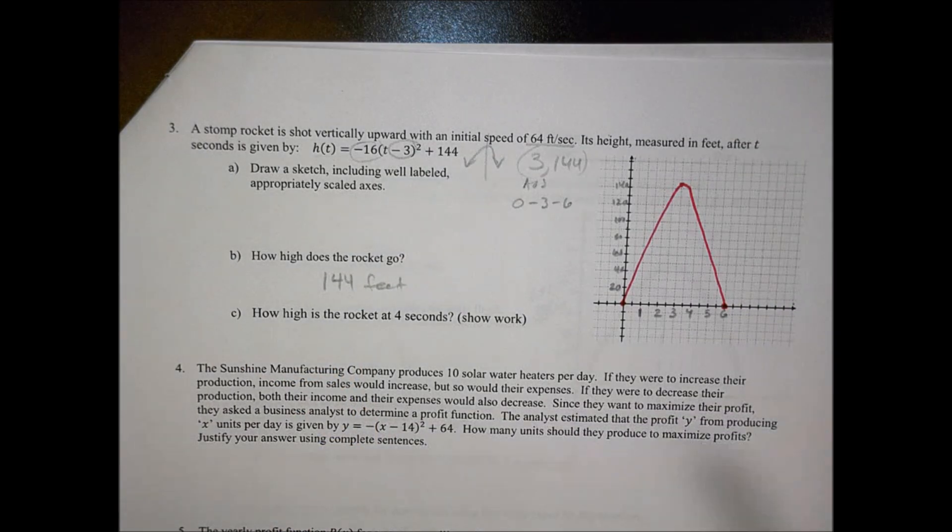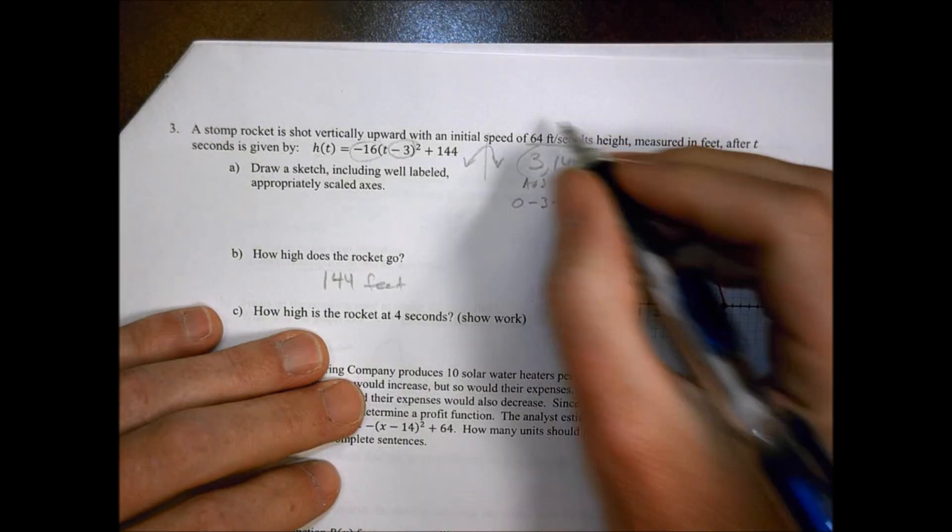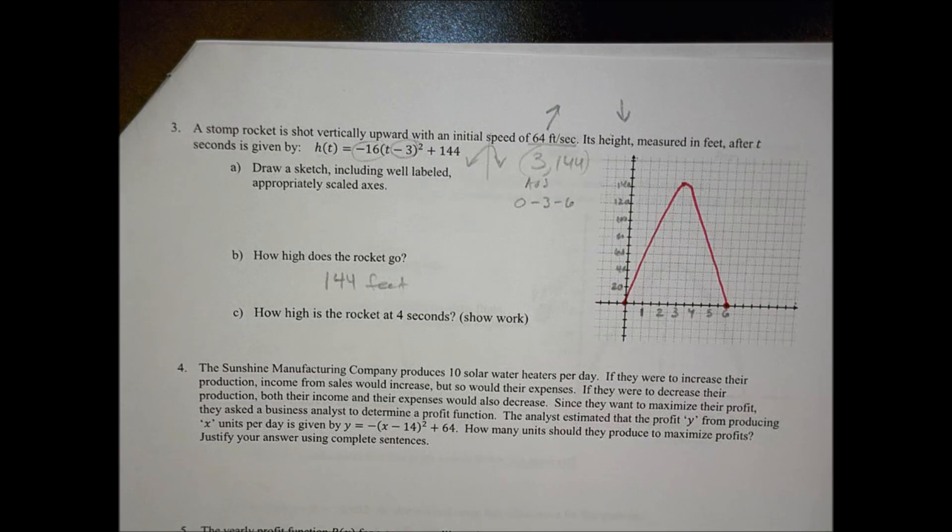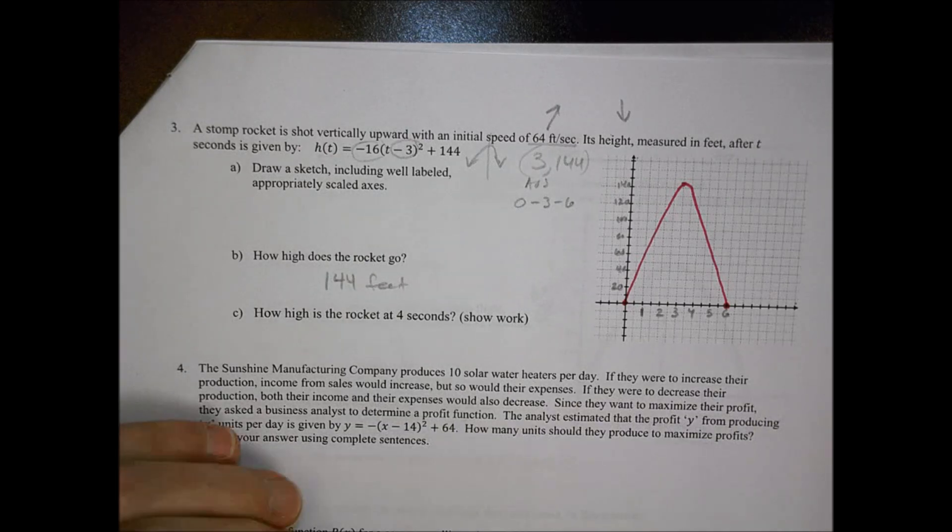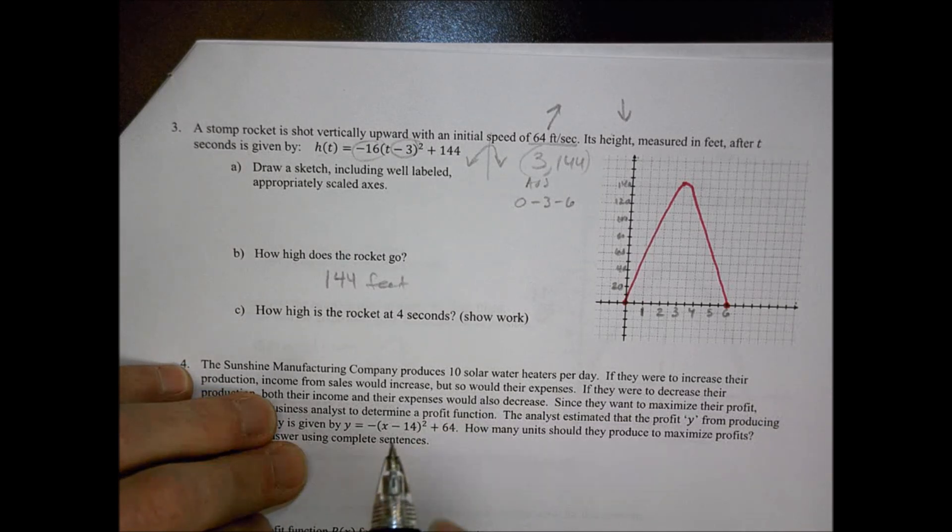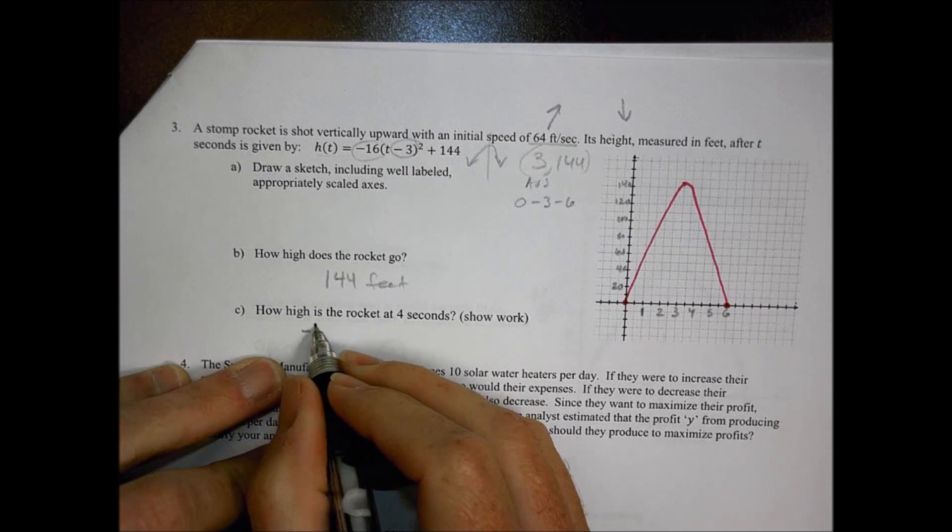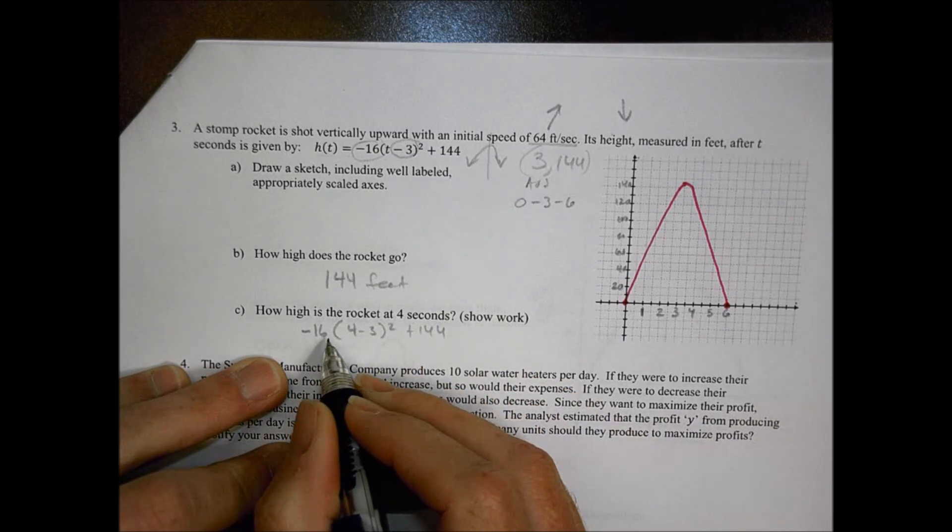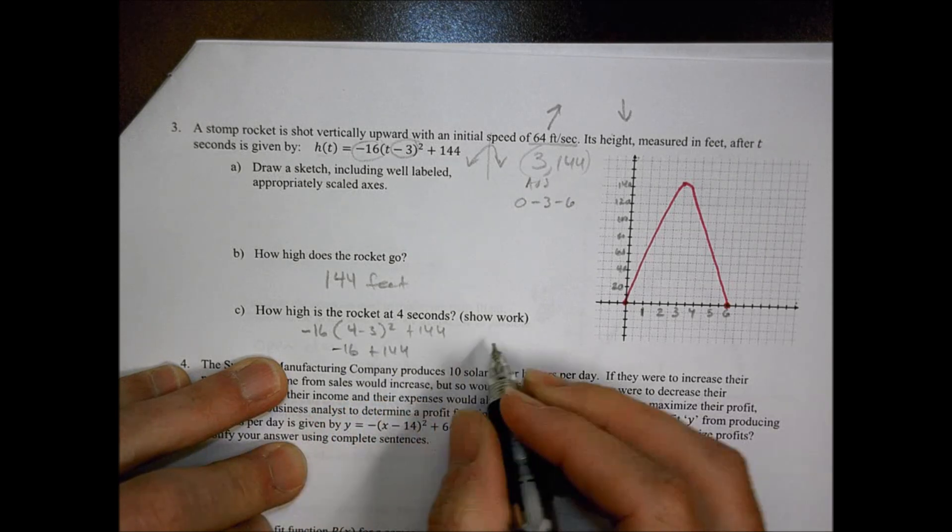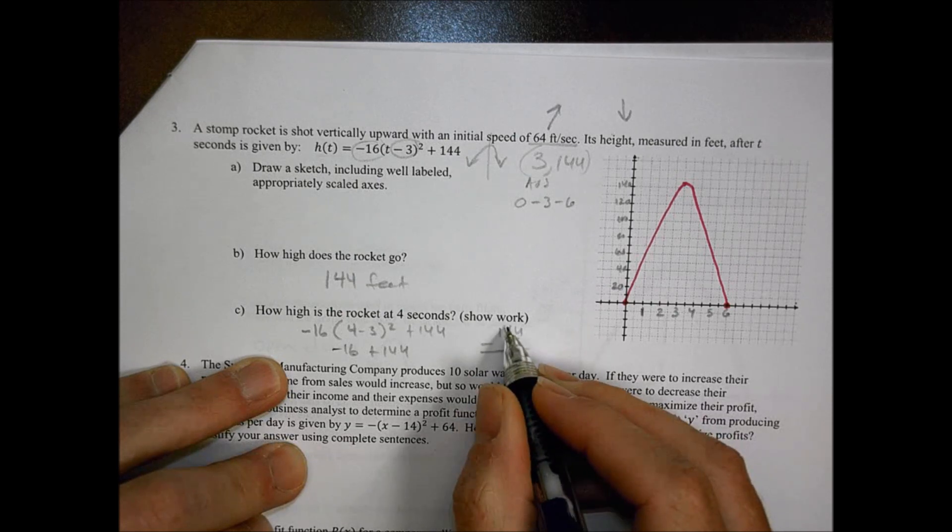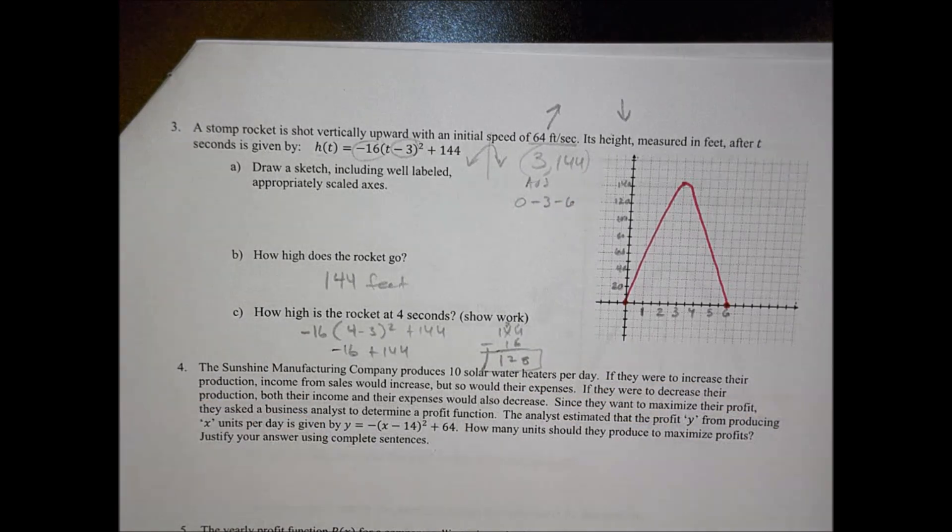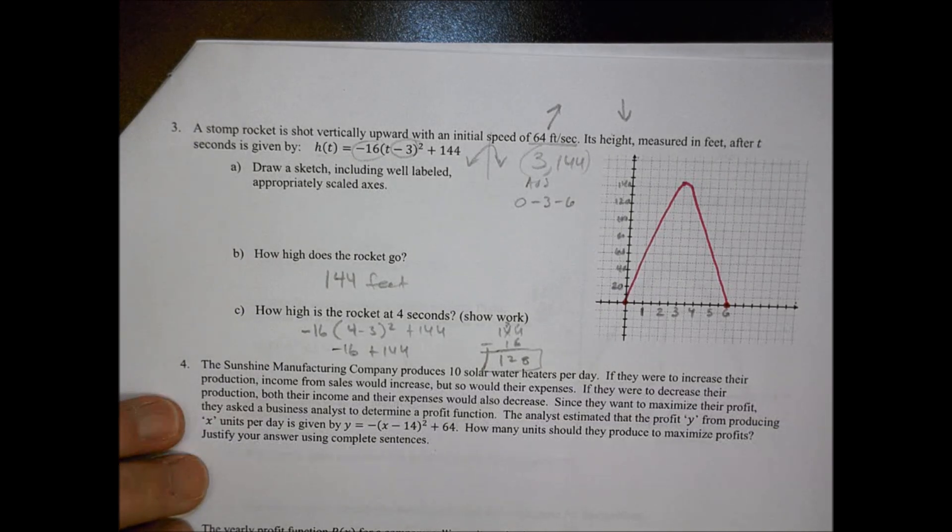How high is the rocket after four seconds? That means we're going to plug that value into the t. So we do negative 16 times (4 minus 3) squared plus 144. Four minus three is one. One squared is one. So negative 16 plus 144. 144 minus 16, we're going to borrow there. We would say we're at 128 feet is the height that we are going to be at for number three.